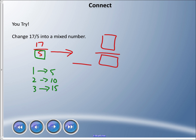That means I have three wholes. Well, if I had fifteen and I have a seventeen numerator, that means seventeen minus fifteen means I have two left over. I'm gonna keep the same denominator, so three and two fifths is your answer.